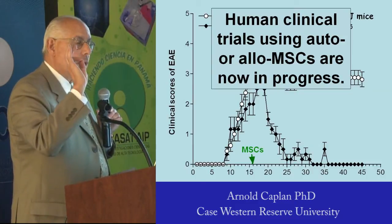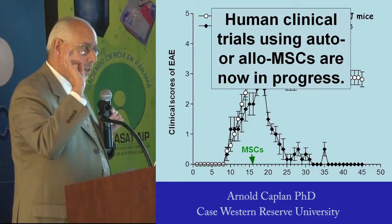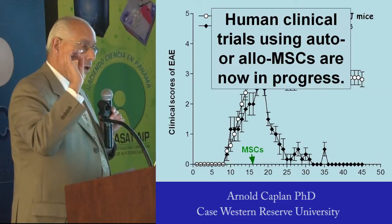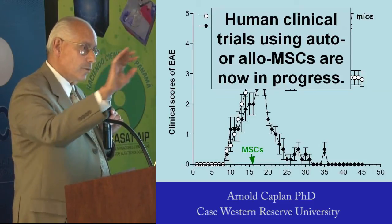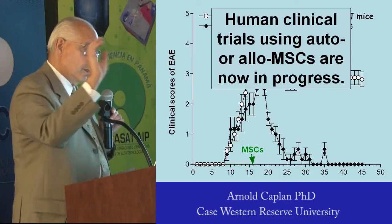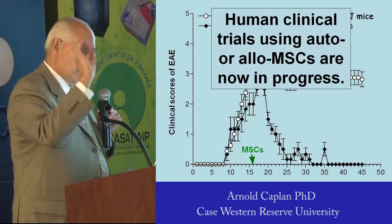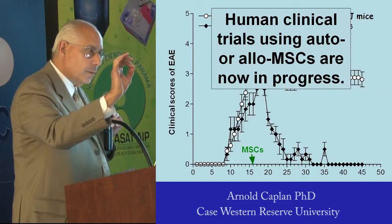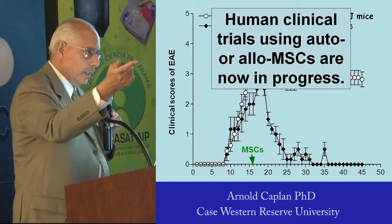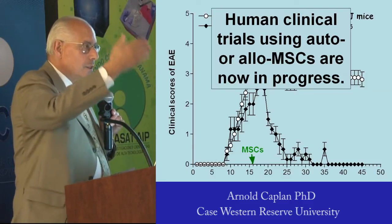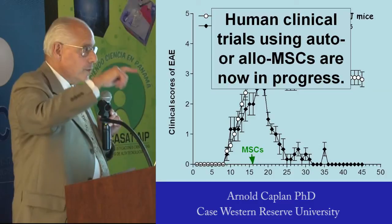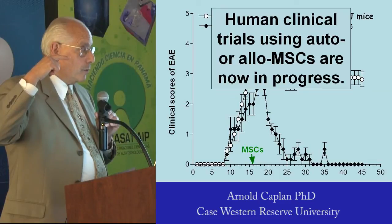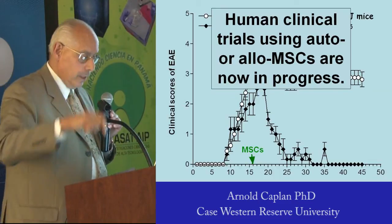Two weeks later, that mouse walks away completely cured of MS. What's happened is the MSCs go to the sites of inflammation, stop the immune system, and cause the intrinsic neural stem cells to differentiate — because of the molecules made by the MSCs — into oligodendrocytes. In serial sections of the central nervous system, we can show that naked axons have become re-wrapped by these new oligodendrocytes. That's curative for MS.